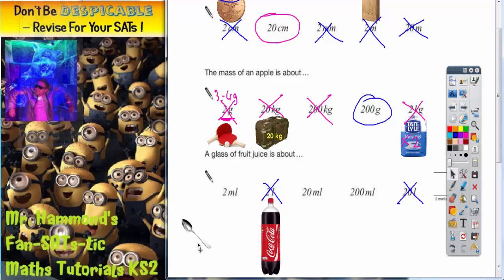Think about the spoon that you get a teabag out of your cup of tea with, or that you put a bit of sugar in with. Now, a teaspoon is actually about five milliliters. So a teaspoon, we'll just write five milliliters on there. So a glass of fruit juice is going to be a lot more than five milliliters on a spoon. So two milliliters is not going to be anywhere near enough.